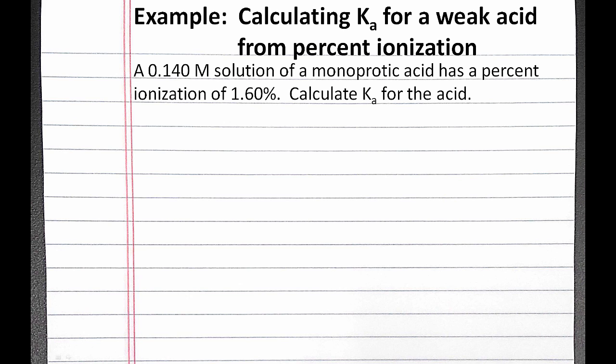In this example problem, we calculate Ka for a weak acid from the percent ionization. The problem reads, a 0.140 molar solution of a monoprotic acid has a percent ionization of 1.60. Calculate Ka for the acid.